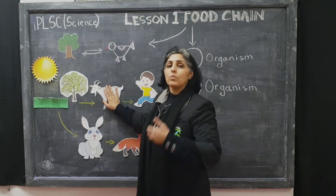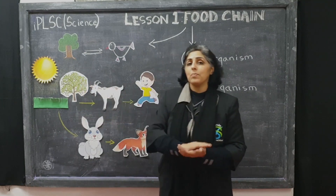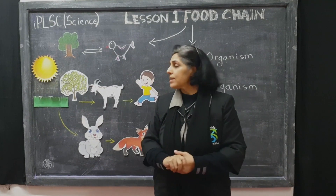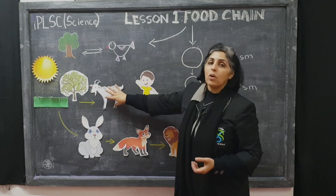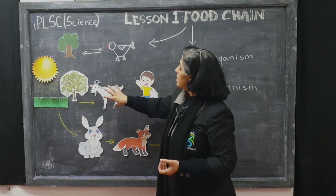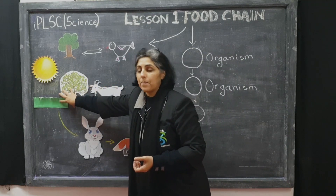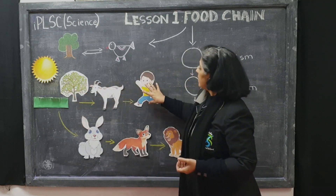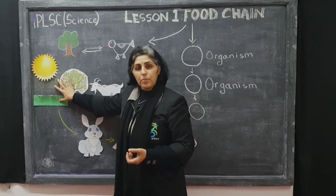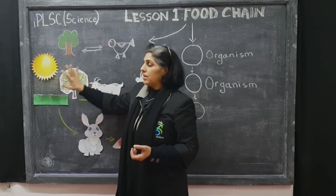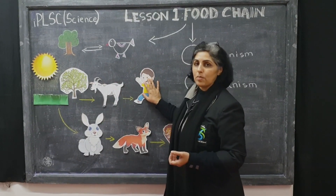These kind of animals we would call herbivores because they eat only plants, vegetables and grass. Each of these are called consumers because this consumes this, this consumes this. This is the producer, this is the consumer, and this is the consumer.